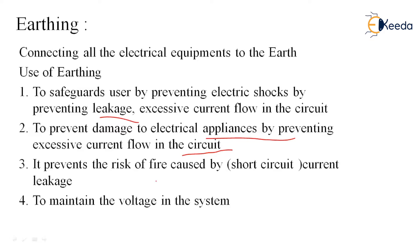To maintain the voltage in the system, because there is fluctuation, we use earthing to have a constant voltage. Earthing also helps in safeguarding the overall system and all the appliances.